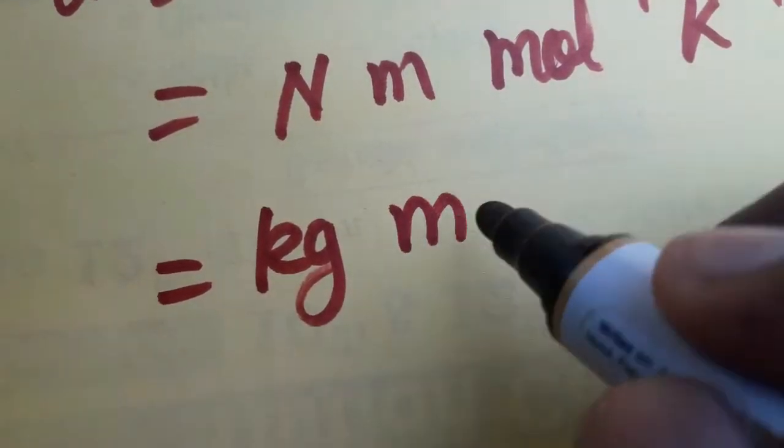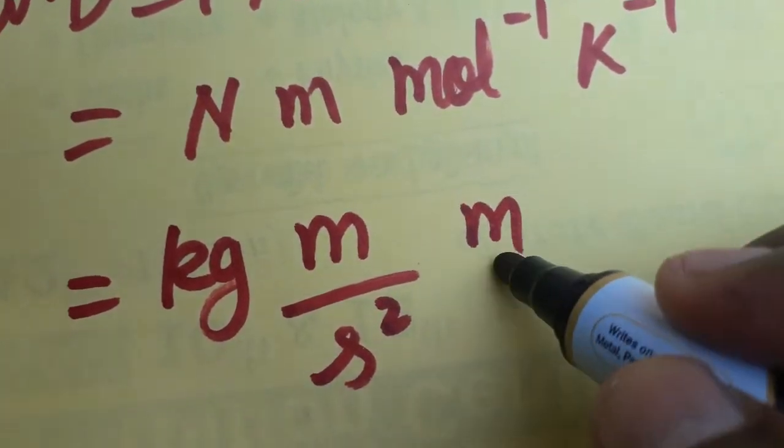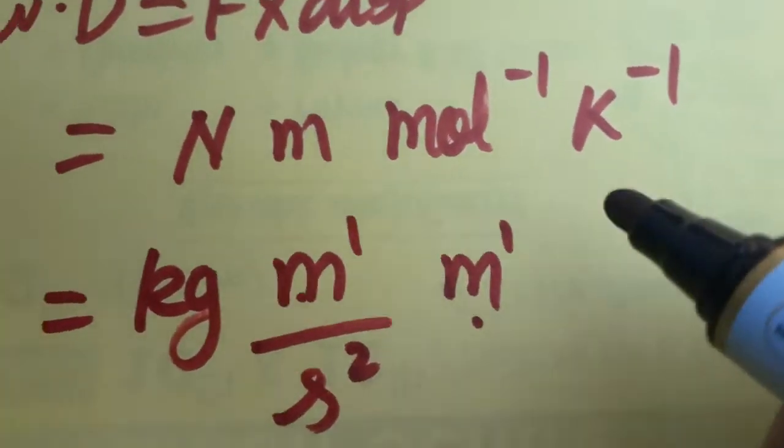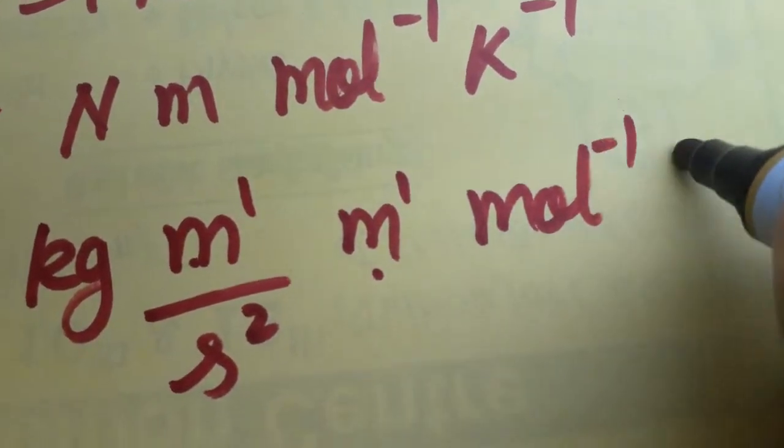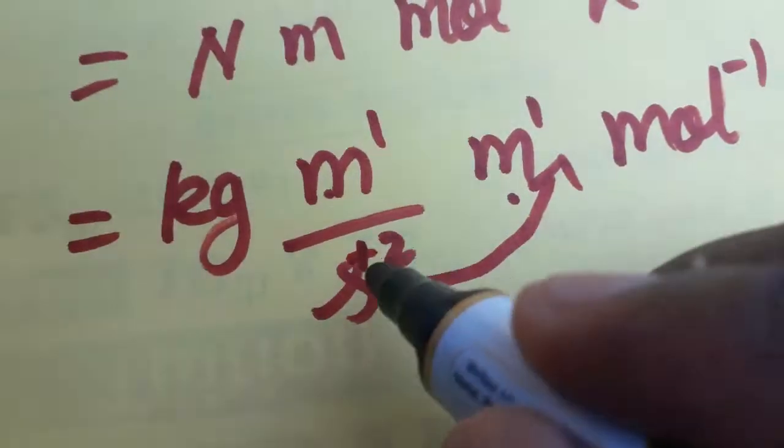Newton is SI unit of force: kg meter by second square, that is second minus two, meter power one, meter square, mole inverse, kelvin inverse. Again, second from denominator I am taken as numerator, plus two is going to change as minus two.